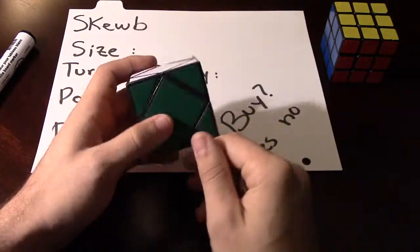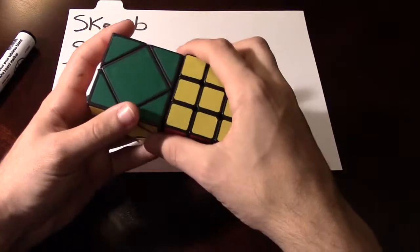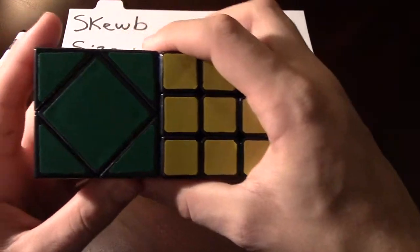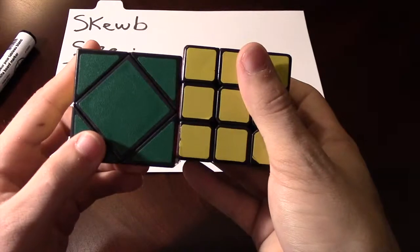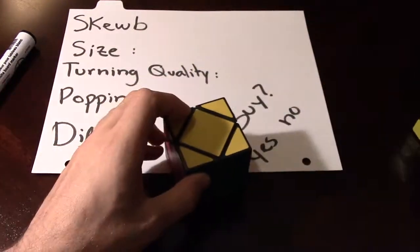We're going to go ahead and review this cube. First of all, starting with its size. Again, it's the same size as a 3x3 Rubik's cube on each side. Of course, it's a cube, and we're going to give it an equal sign because it's the exact same size.